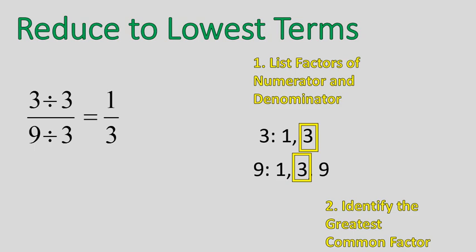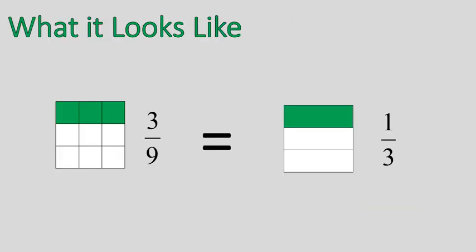Okay, this is how we reduce a fraction to lowest terms. What this looks like, I wanted to show this, just to sort of show what this looks like. That's a fraction of 3 ninths, that's a fraction of 1 third. They're the same. It's the same amount. It's just written in a more simplified form. That's why we also sometimes call this simplifying fractions.